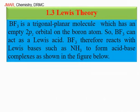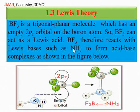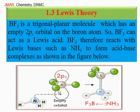Another example of Lewis acid-base theory: boron trifluoride (BF₃) is a triangular planar molecule with an empty Pz orbital, so BF₃ can act as a Lewis acid. Ammonia is a Lewis base. BF₃ reacts with ammonia: in the figure, we see there is a lone pair of electrons on the nitrogen atom in ammonia, and BF₃ has an empty Pz orbital. This lone pair of electrons is donated into that empty orbital, forming an acid-base complex.